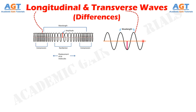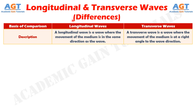If we differentiate longitudinal and transverse waves in terms of how we describe them: a longitudinal wave is a wave where the movement of the medium is in the same direction as the wave, whereas a transverse wave is a wave where the movement of the medium is at a right angle to the wave direction.